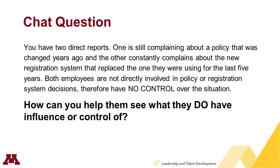Here is the scenario: you have two direct reports. One is still complaining about a policy that changed years ago, and the other constantly complains about a new registration system that replaced the one they used for the last five years. Both employees are not directly involved in policy or registration system decisions and therefore have no control over the situation. If you were supervising these employees, what might you do to move them from the 'no control' circle to the 'influence or control' areas?